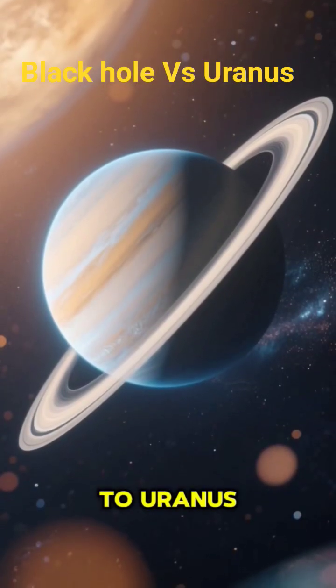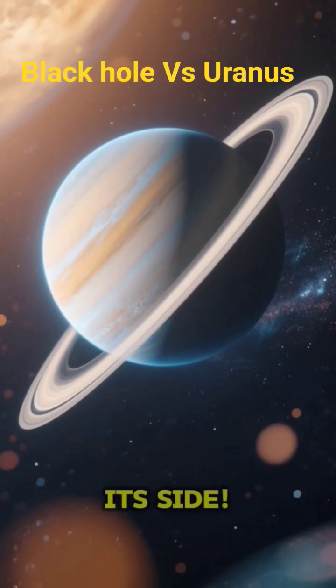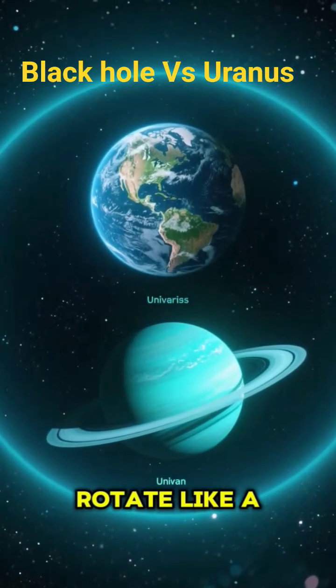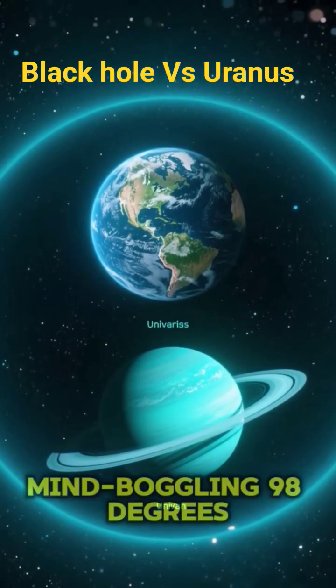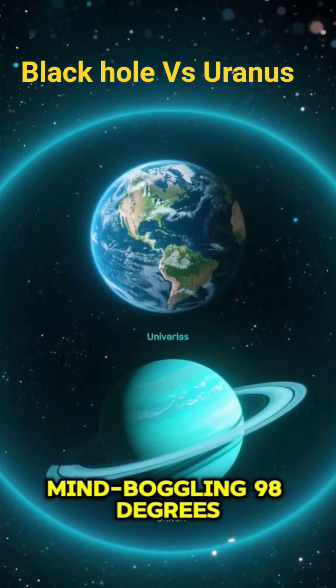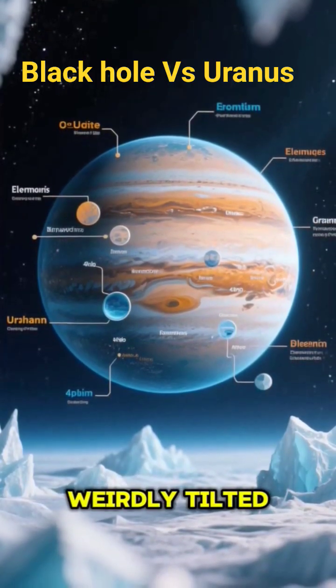Now let's flip to Uranus, the only planet that spins on its side. While most planets rotate like a top, Uranus rolls around the sun, tilted at a mind-boggling 98 degrees. Uranus isn't just weirdly tilted.